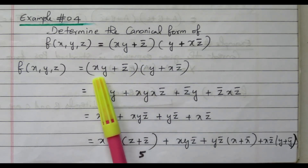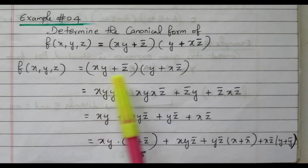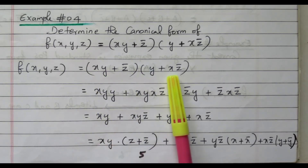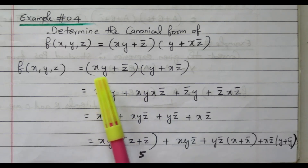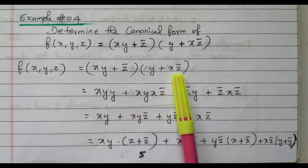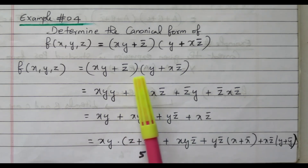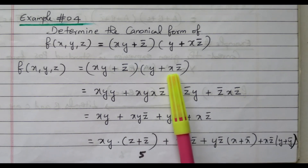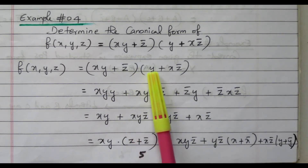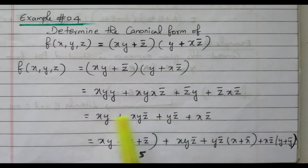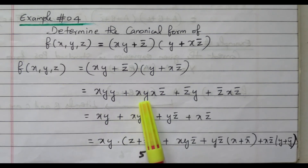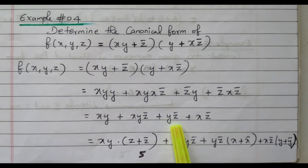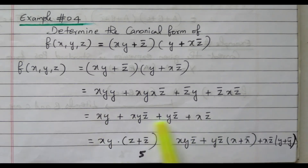Multiplying (XY + Z̄)(Y + XZ̄): XY·Y + XY·XZ̄ + Z̄·Y + Z̄·XZ̄. XY·Y = XY (since Y·Y = Y). XY·XZ̄ = XYZ̄ (since X·X = X). Z̄·Y = YZ̄. Z̄·XZ̄ = XZ̄ (since Z̄·Z̄ = Z̄). So we get: XY + XYZ̄ + YZ̄ + XZ̄. Four product terms are available.